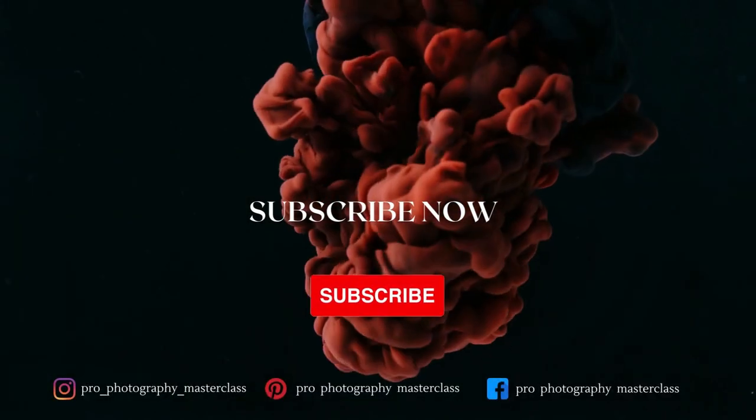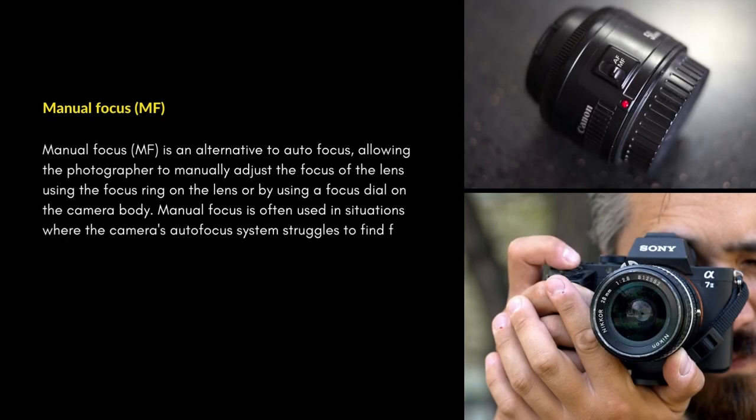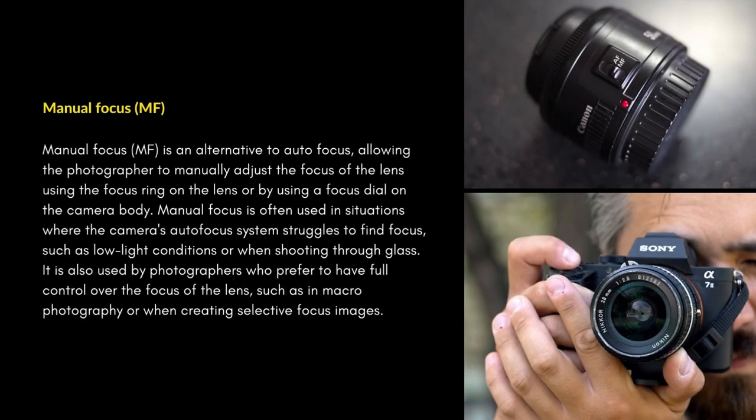Manual focus is an alternative to autofocus, allowing the photographer to manually adjust the focus of the lens using the focus ring on the lens or by using a focus dial on the camera body. Manual focus is often used in situations where the camera's autofocus system struggles to find focus, such as low light conditions or when shooting through glass.